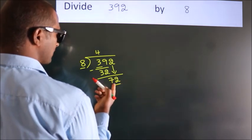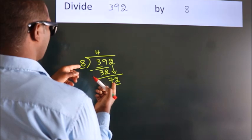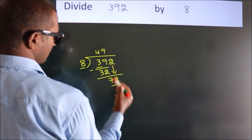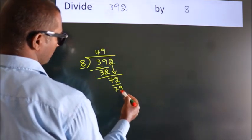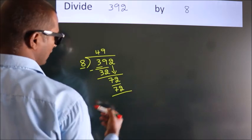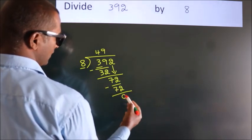When do we get 72 in the 8 table? 8 times 9 is 72. Now we subtract and we get 0.